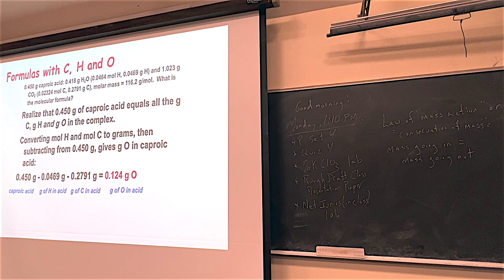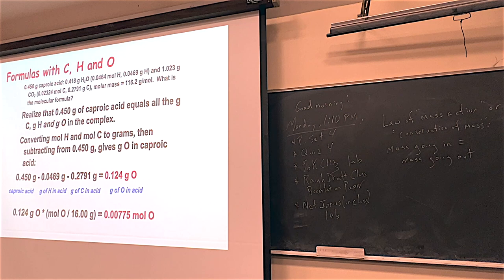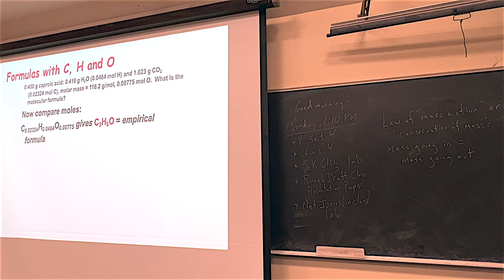Once you have the grams of oxygen in the sample, we can turn that into moles of oxygen. Oxygen is about 16 grams per mole, giving 0.00775 moles of oxygen. Now we have moles of oxygen. On the previous page we had moles of carbon and moles of hydrogen. Now we can compare moles to find empirical formulas. Dividing all numbers by the smallest — 0.00775 — the oxygen divided by itself is 1, 0.0464 divided by the oxygen comes out to 6, and the carbon divided by that number comes out to 3. So our empirical formula for caproic acid is C3H6O.